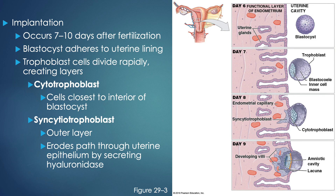When implantation occurs, typically between day seven and ten after fertilization (roughly day 21 to day 24 of the menstrual cycle), the blastocyst adheres and the trophoblastic cells divide rapidly, creating several layers: the cytotrophoblasts (cells closest to the interior of the blastocyst) and the syncytiotrophoblasts (the outer layer). Placental tissue arises from the syncytiotrophoblasts, which makes sense as they have contact with the uterine wall.